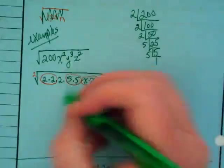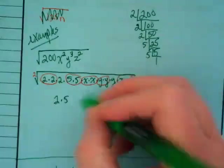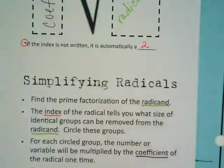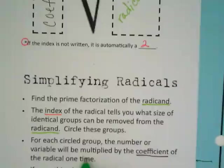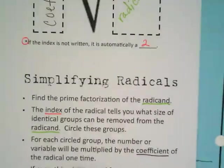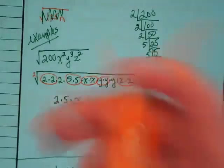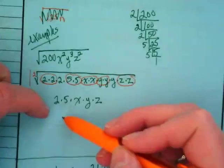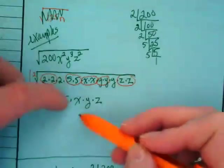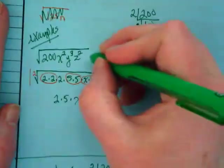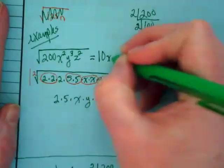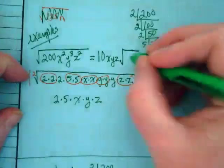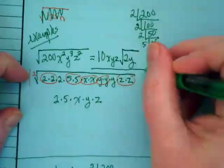What I am pulling out of the radicand is 2 times 5 times x times y times z, because for each circled group, the number or variable will be multiplied by the coefficient of the radical one time. There is no coefficient out here - it's an invisible one. So that means for each one I circled, because I circled two twos I get one two, because I circled two fives I get one five. What is 2 times 5? So this equals 10xyz. And what's left inside the radical? 2 and y. And there's my answer.